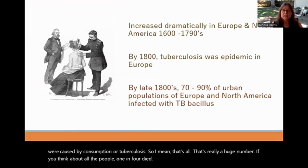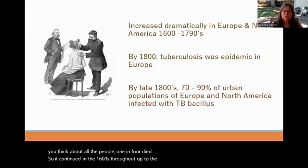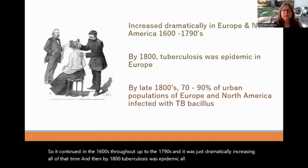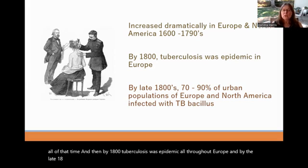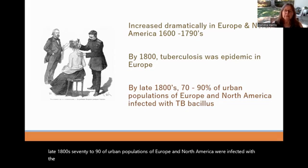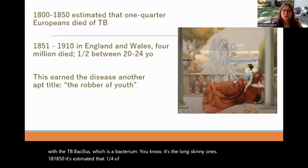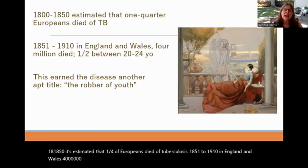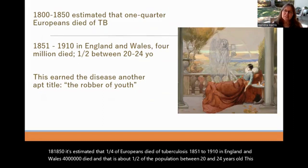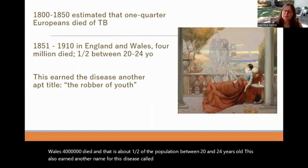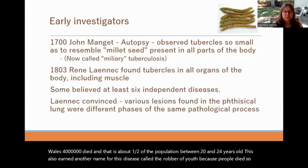It continued dramatically increasing from the 1600s through the 1790s, and by 1800, tuberculosis was epidemic all throughout Europe. By the late 1800s, 70 to 90% of urban populations in Europe and North America were infected with the TB bacillus, a bacterium. By 1850, an estimated quarter of Europeans died of tuberculosis. From 1851 to 1910 in England and Wales, 4 million died — about half the population aged 20 to 24. This earned the disease another name: the robber of youth.